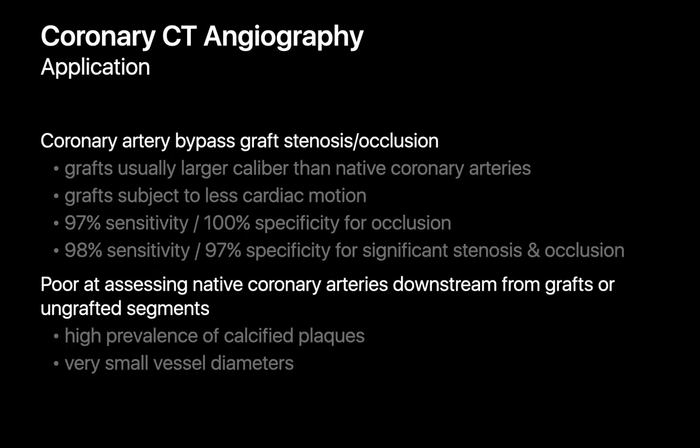Coronary CTA can also be a very nice way of assessing the patency of coronary artery bypass grafts. Compared to native coronary arteries, coronary bypass grafts tend to be easier to assess because they're often of larger caliber and subject to less cardiac motion. In fact, the sensitivity and specificity of CTA for coronary bypass graft occlusions and significant stenosis is very high. On the other hand, coronary CTA is pretty poor at assessing native coronary arteries downstream from grafts and ungrafted segments due to their very small diameters and typically high preponderance for calcified plaques.